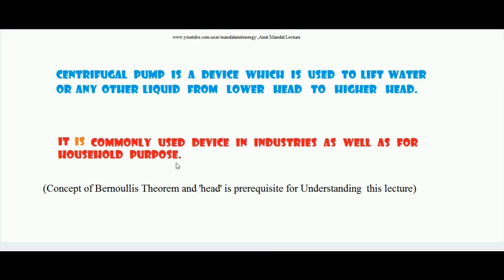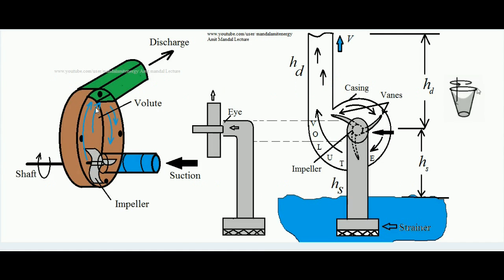One common example of use of centrifugal pump for household purpose is the submerged pump of your desert cooler. In a desert cooler there is a pump submerged inside the tank which contains water. The job of this pump is to suck the water from that tank and lift it to the point from where it falls over the pads of the desert cooler. It is also used to lift water from an underground tank to the overhead tank of the house.